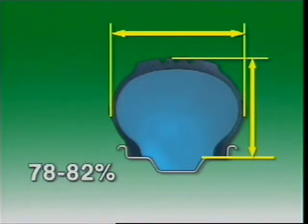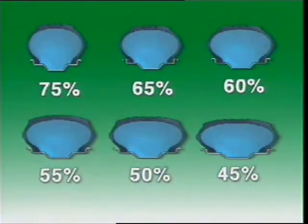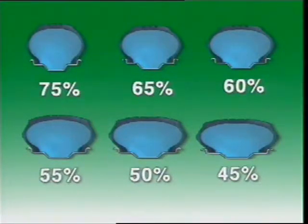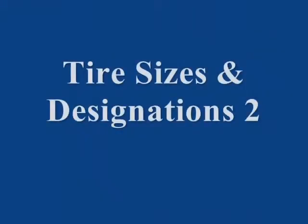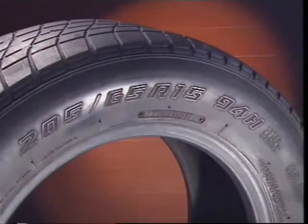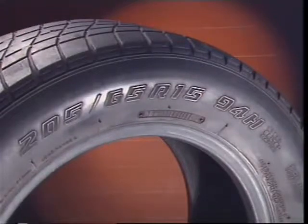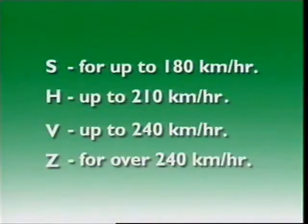The profile of cross-ply tyres was reduced further to between 78% and 82%, called a super low section. However, the stiffness of cross-ply tyres makes them unsuitable for further profile reduction. Radial ply tyres have been manufactured in 78% profile and also with further reductions from 75% to 45%. Information on tyre aspect ratio is now included in the sidewall marking, together with the type of construction and the speed rating.